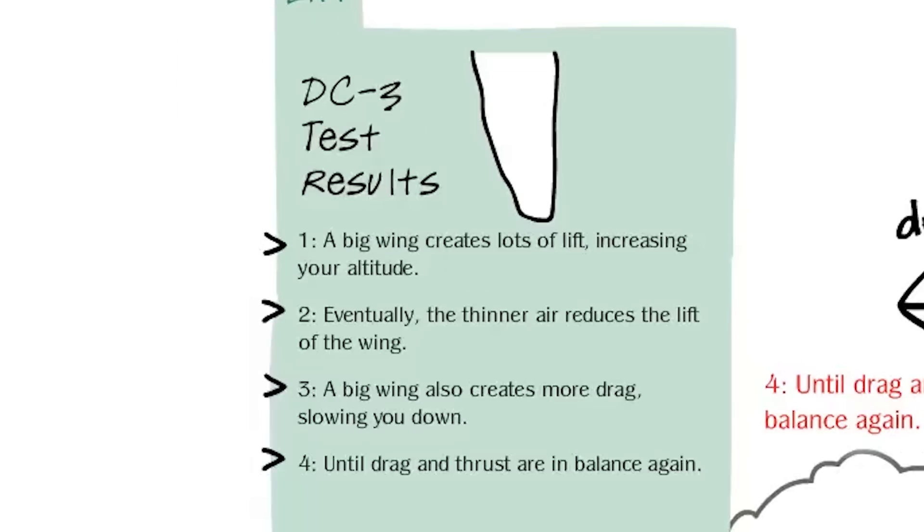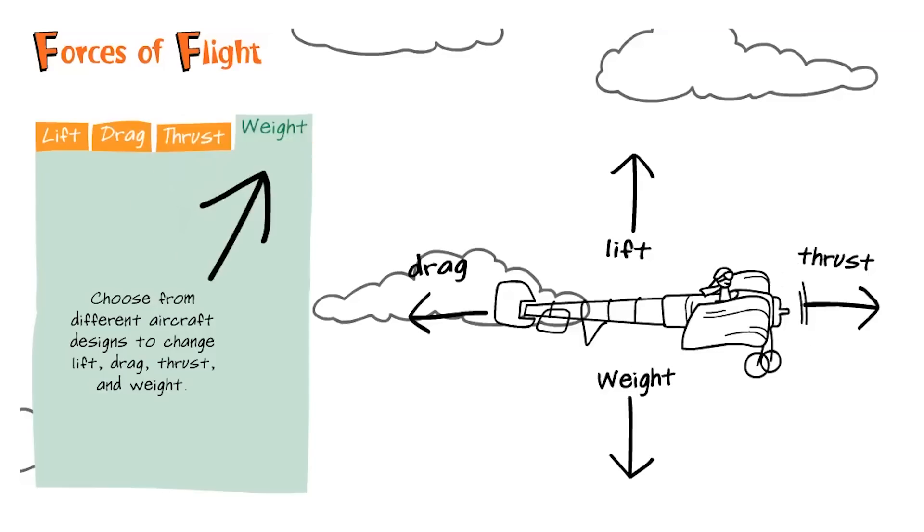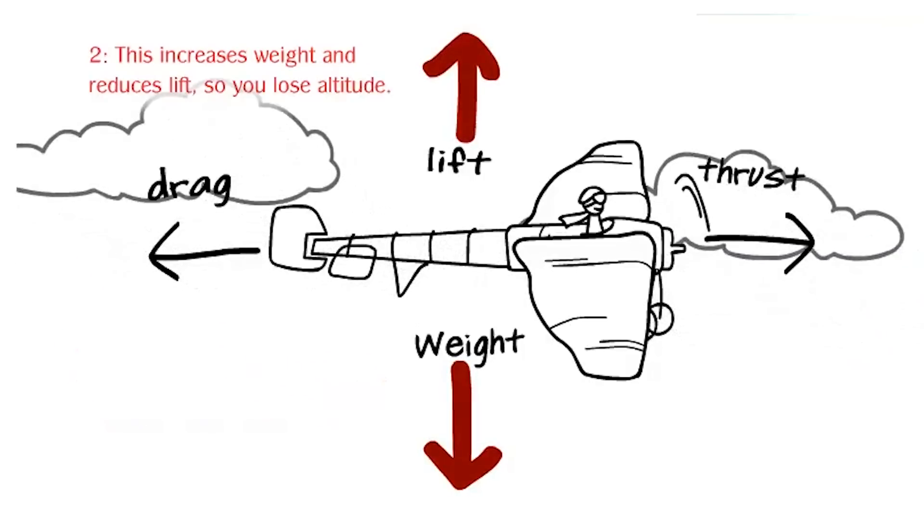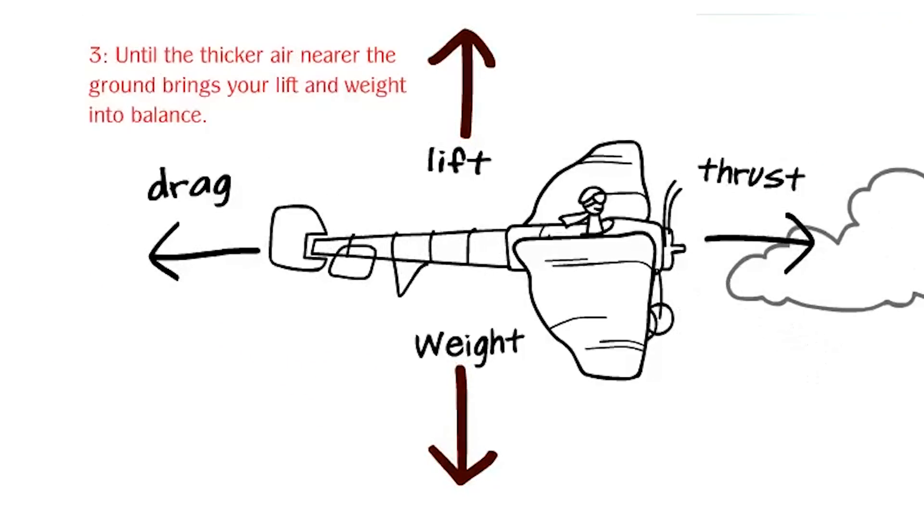but it isn't going as planned. Larger wings cause more drag and slow it down, so let's manipulate weight. Now what would happen if a plane was made of wood? It's strong and lightweight, but we need more of it to build a durable vehicle, so this reduces lift, which makes altitude decline.